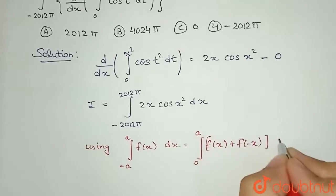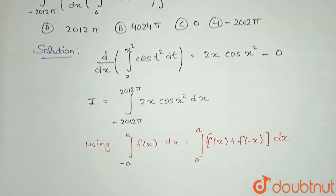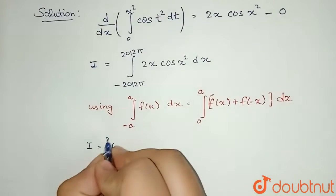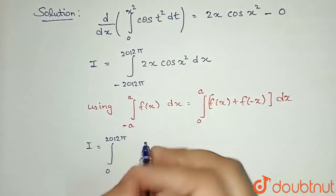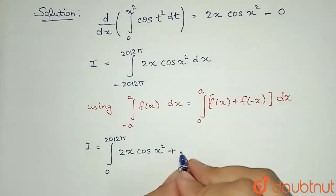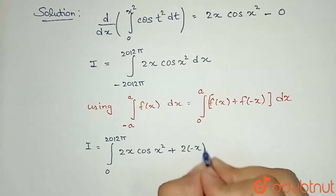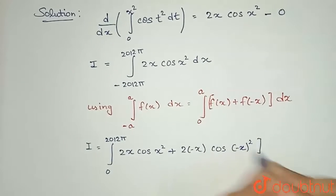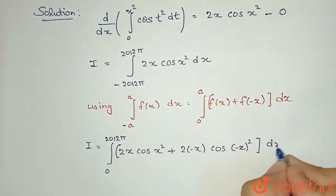Integration of this with respect to dx, if I use here, let us see what we get. Integral from 0 to 2012π of f(x), that means as it is I need to write the function, plus f(-x), so 2 times -x times cos(-x)², and integration of this with respect to dx.